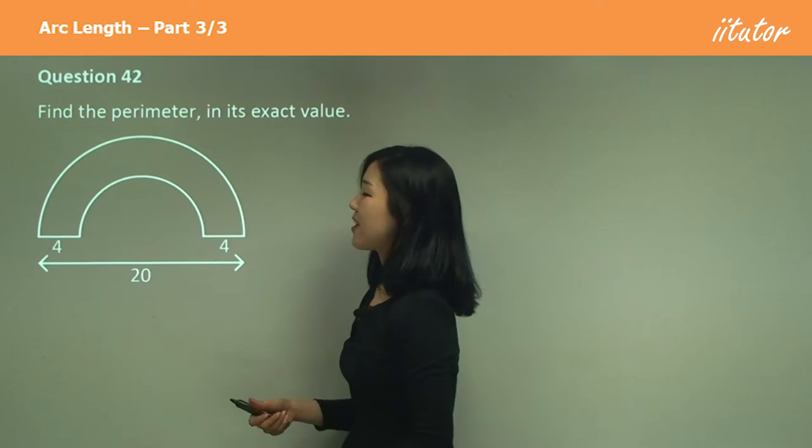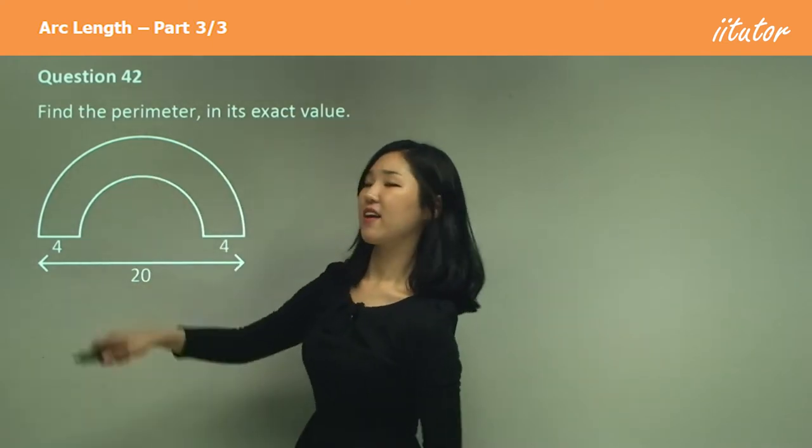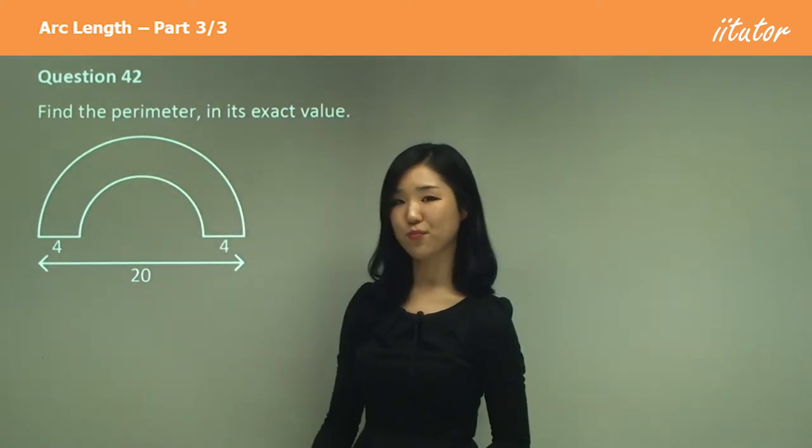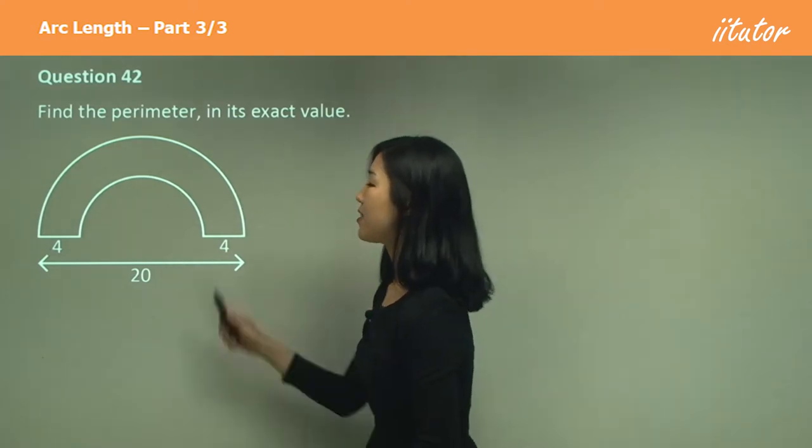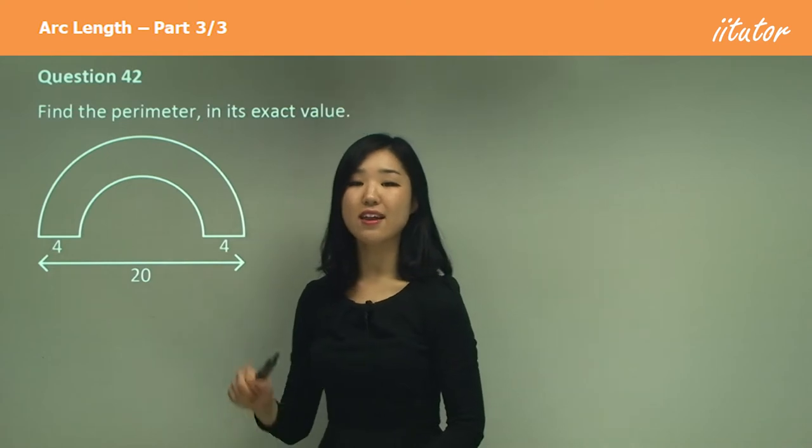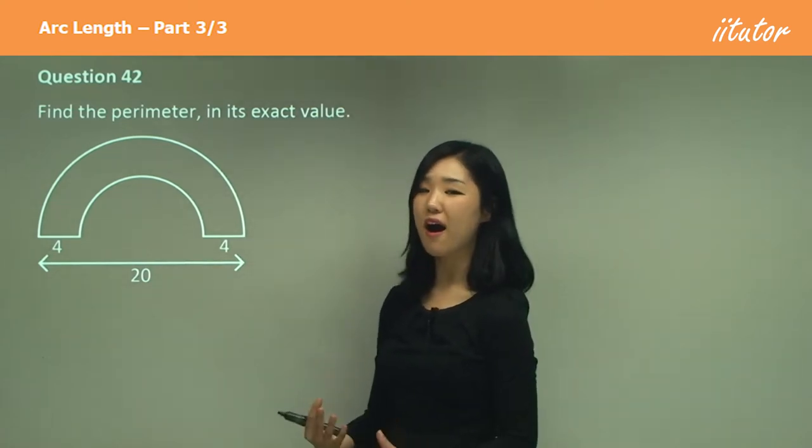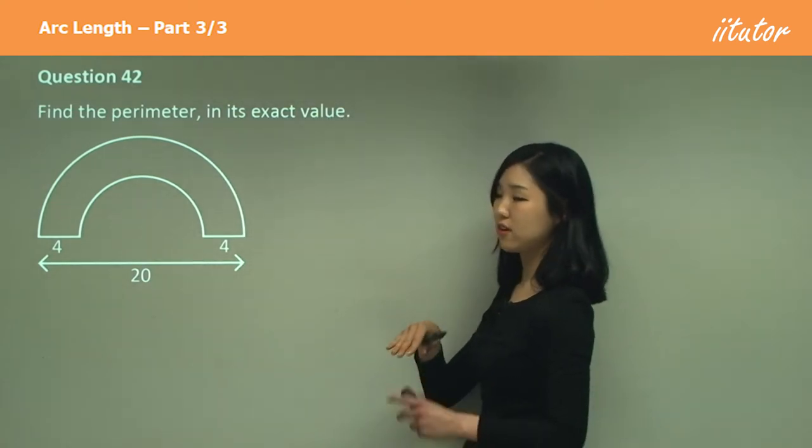Now I hope you guys can see that this arc and this arc, they're both part of a semicircle, okay, they're a half of a full circle. So what we need to do is calculate the individual circumferences and divide it by two or times by half because we want half of the circumference.